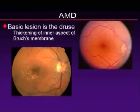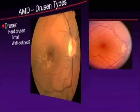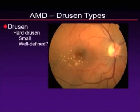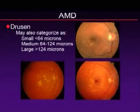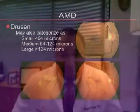The basic lesion is the drusen, representing thickening of the inner aspect of Bruch's membrane. You see a normal healthy retina in the upper right corner, and then you see the drusen accumulating in the macula in the lower picture. We classify drusen as hard drusen, which can be small and well-defined, or soft drusen, which can be less well-defined — and each type has a difference in prognosis. We also categorize drusen as small, medium, and large. Small, hard drusen are usually better than large, soft drusen.